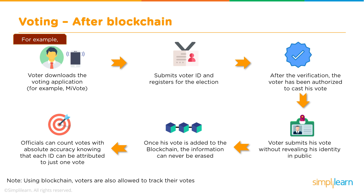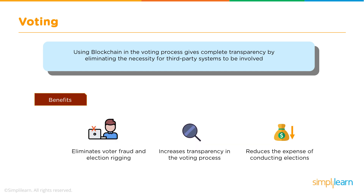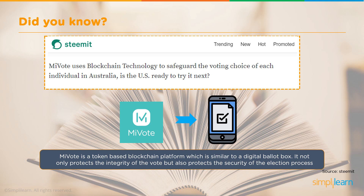Officials can count the votes knowing each ID can be attributed to just one vote, and voters can also count votes themselves. Using blockchain in the voting process provides complete transparency by eliminating any need for third-party systems. It also eliminates voter fraud and election rigging, increases transparency, and reduces the expense of conducting elections. In real life, MeVote — a token-based blockchain platform — works similar to a digital ballot box, protecting the integrity and security of the election process. It is already implemented in Australia.